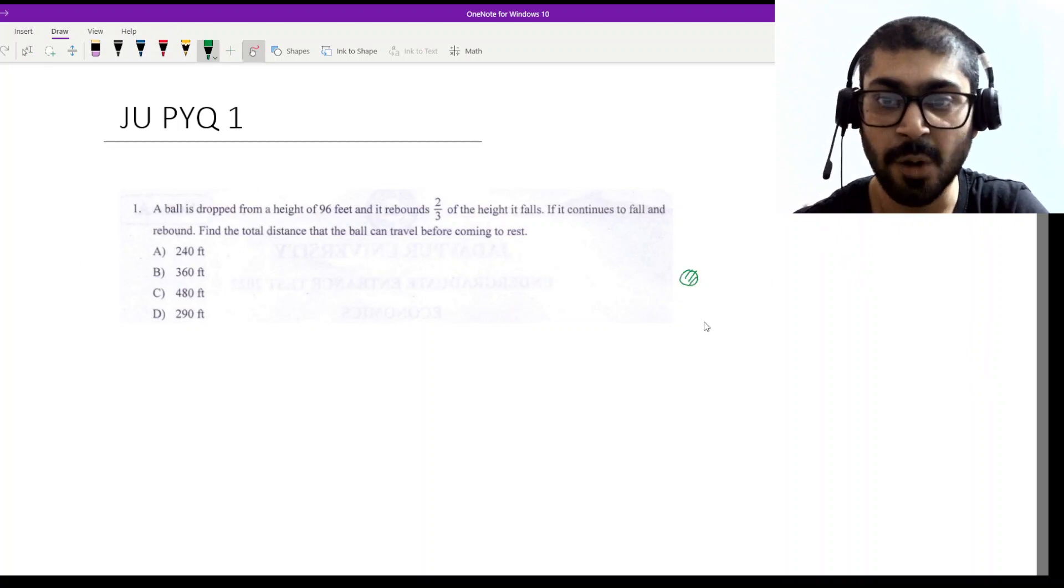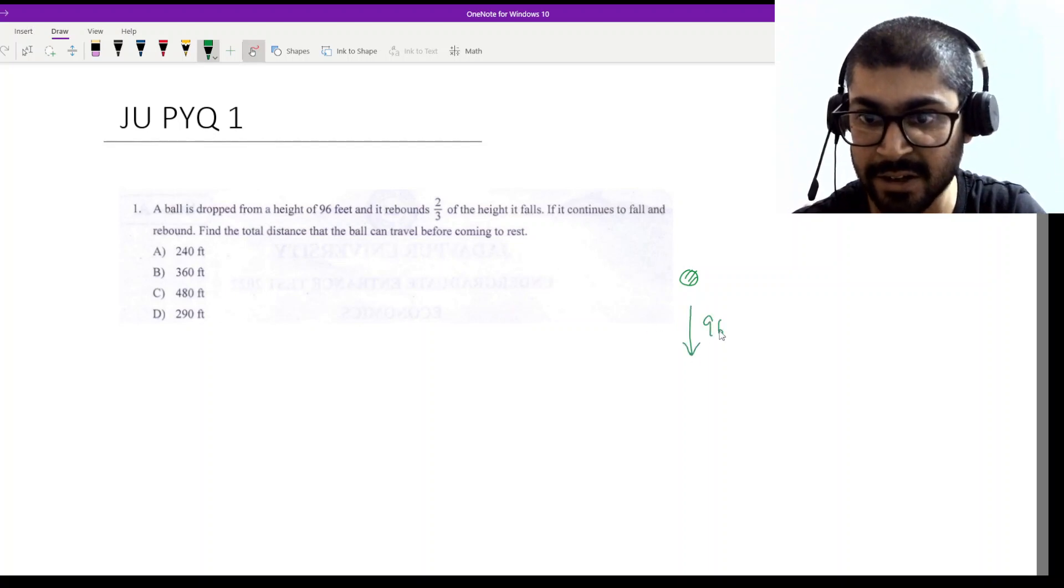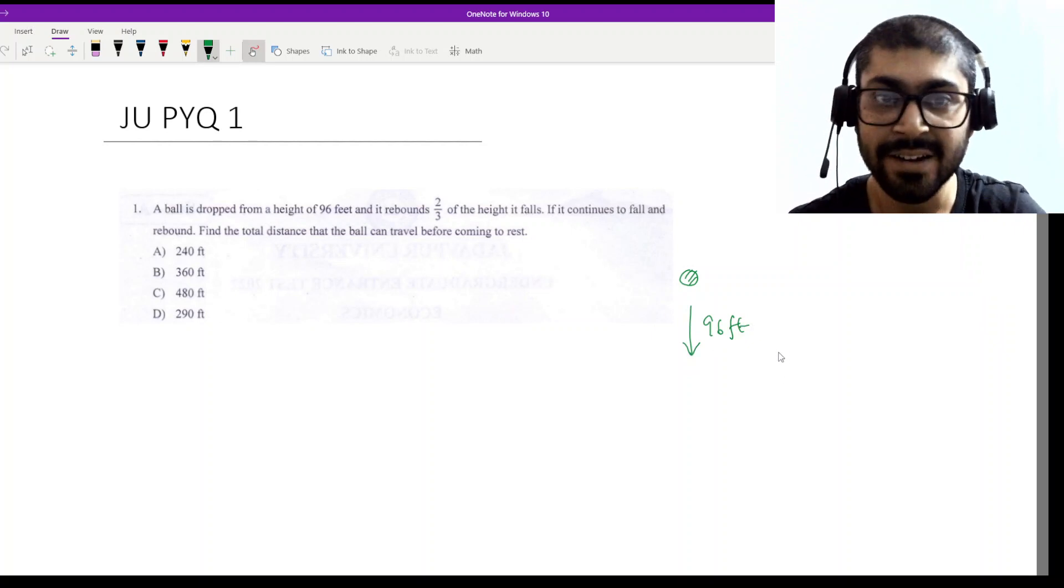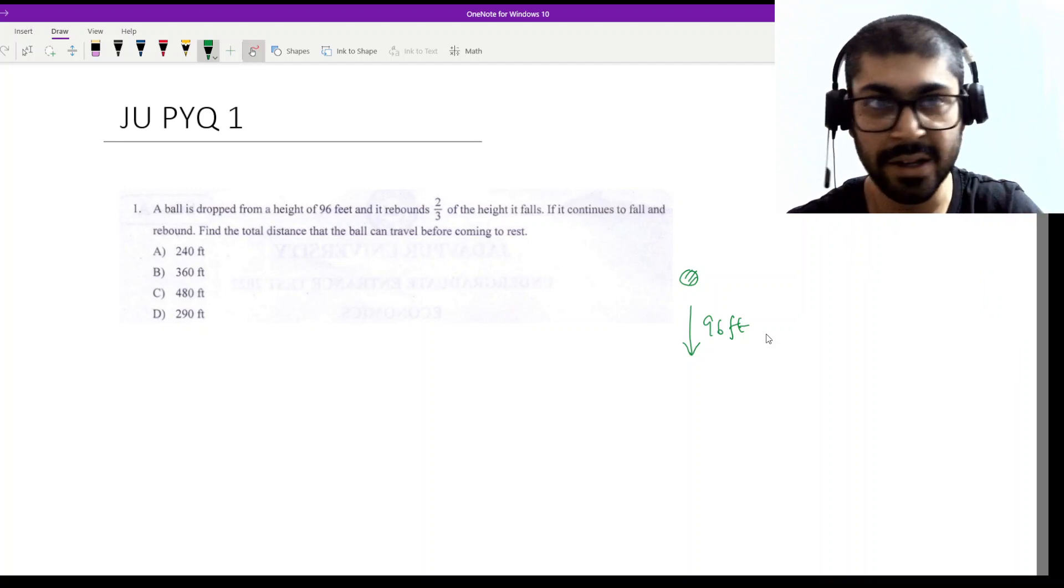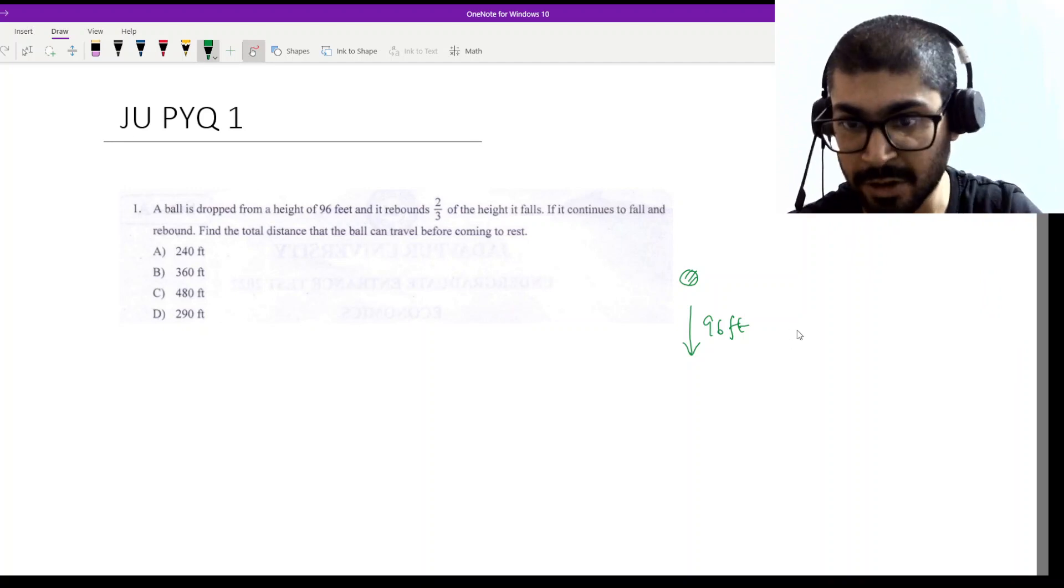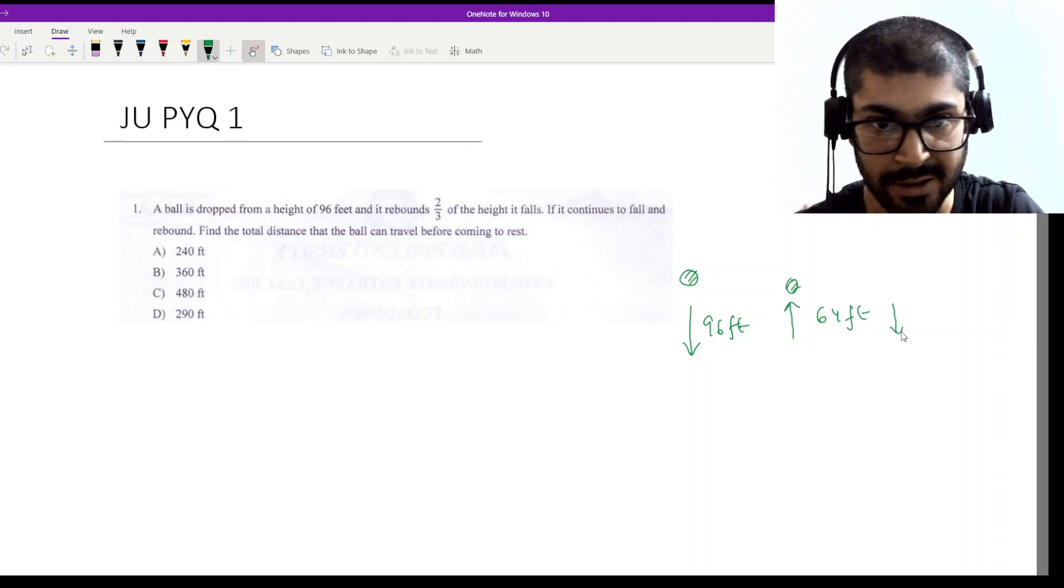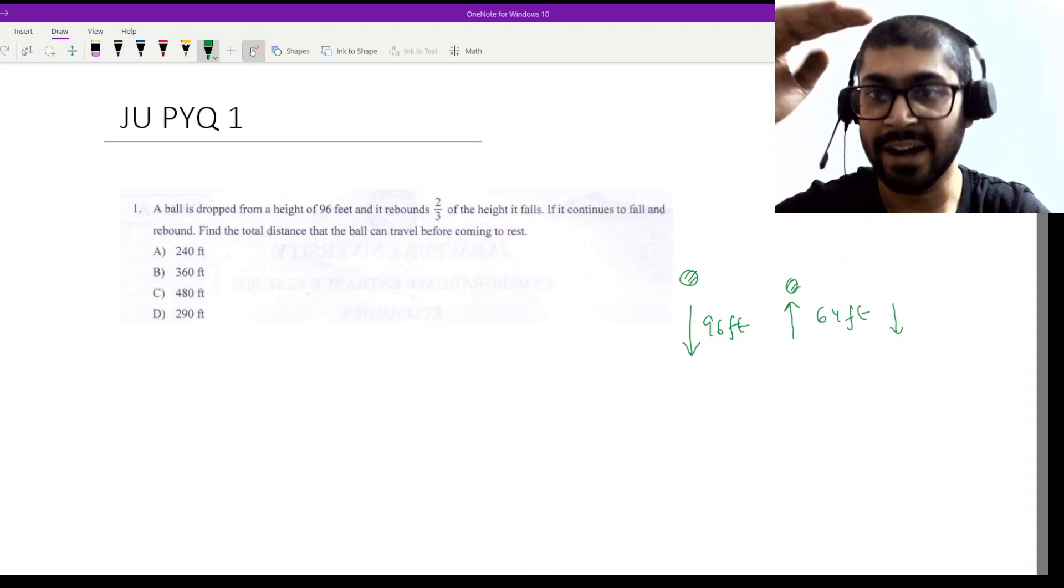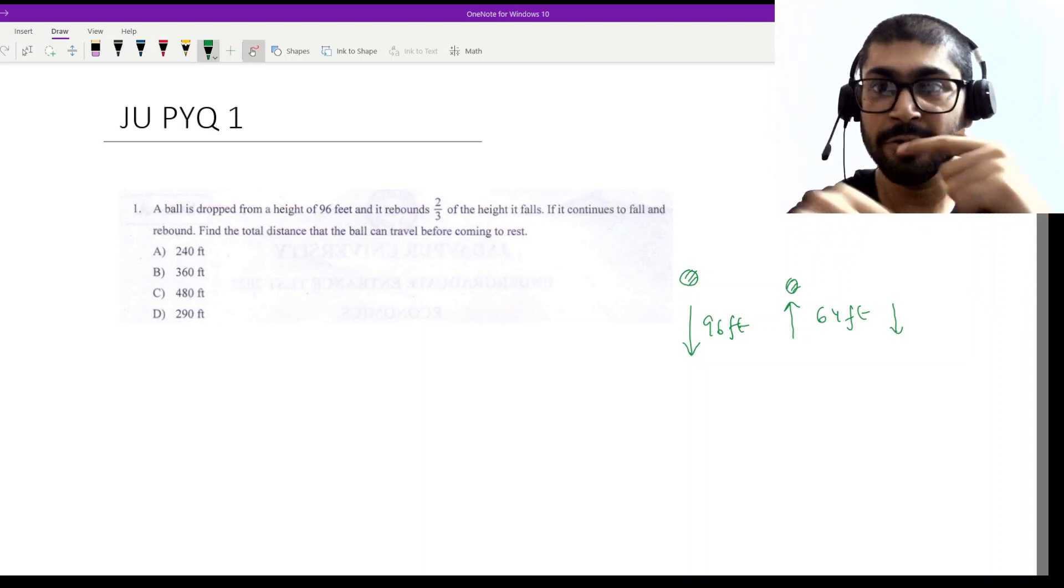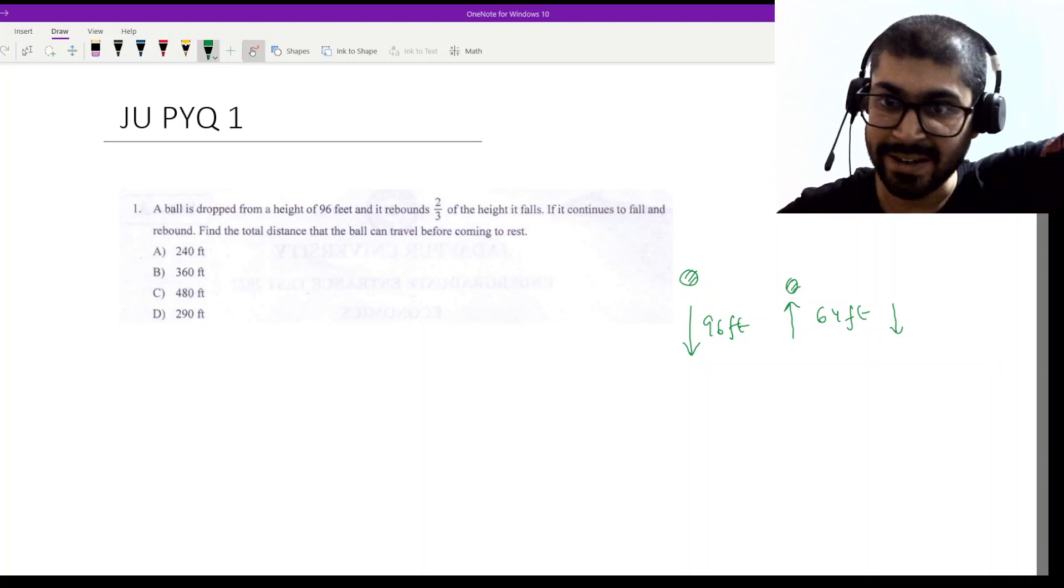This ball falls from a height of 96 feet, then it rebounds 2/3. So what is 2/3 of 96? One third would be 32, so 2/3 would be 64. Then the ball is at the height of 64 feet. Now this will again come down. So once the ball is up in the air at 64 feet height, it will have to come down once again.